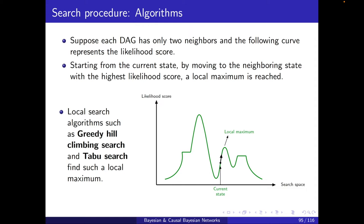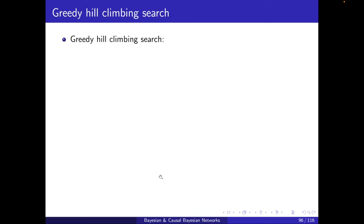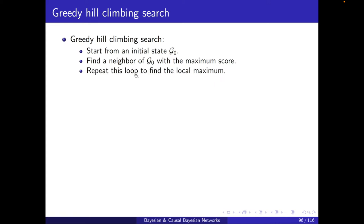But this is still an improvement compared to the current state or an initial condition. This local search algorithm, we can have several of them. Greedy hill climbing search and taboo search, these are to find such a local maximum. We'll start with the greedy hill climbing. The greedy hill climbing search is quite straightforward. We will start from initial state G0, find a neighbor of G0 with the maximum score, and repeat this loop to find the local maximum. It's basically as what we described earlier.